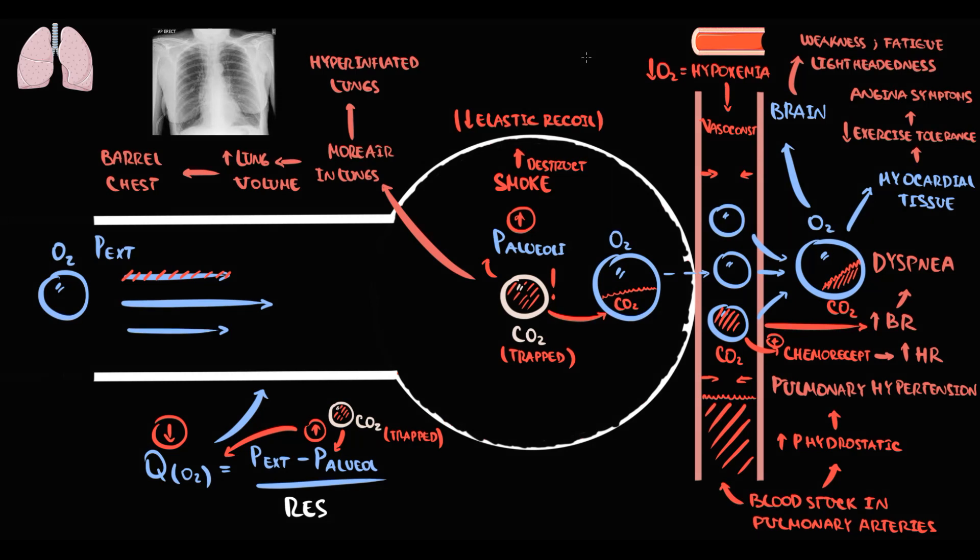In response to decreasing blood oxygen concentration, kidneys begin to produce more erythropoietin that stimulates the production of red blood cells. With increasing red blood cell concentration, the concentration of hemoglobin increases. So secondary polycythemia develops.